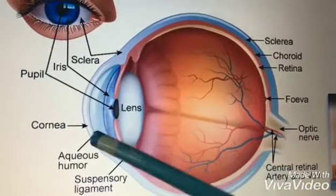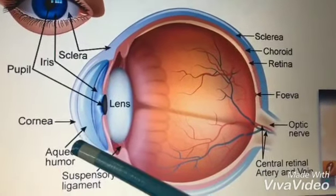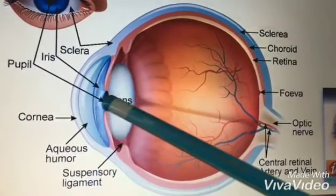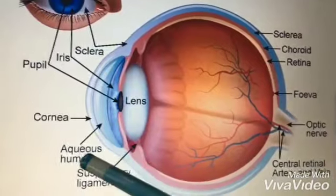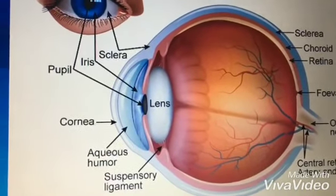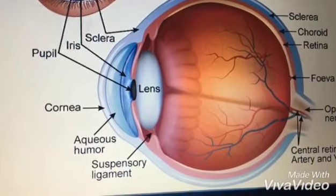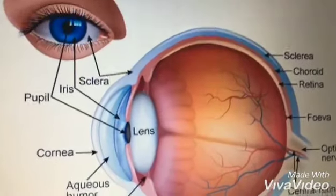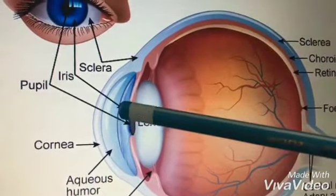After the cornea, we have the aqueous humor. The aqueous humor is found in the area between the cornea and the iris. It's a water-like substance.